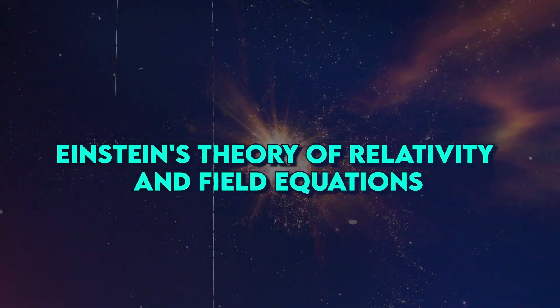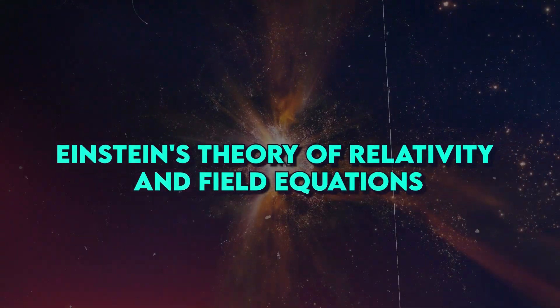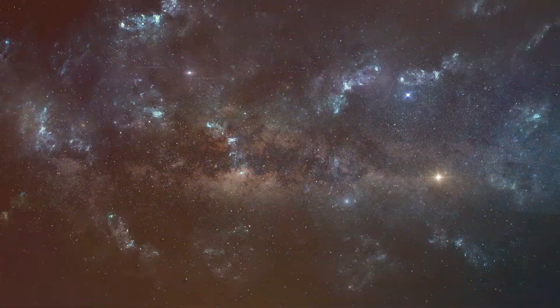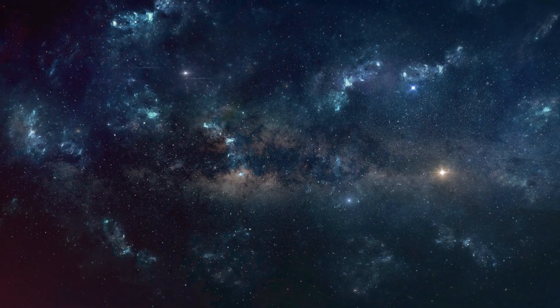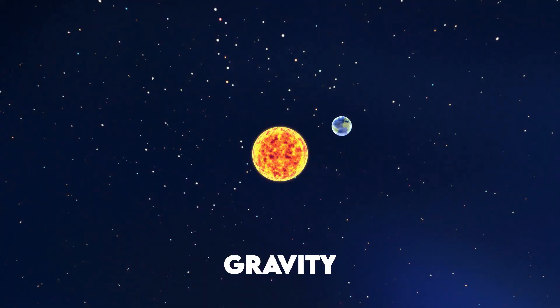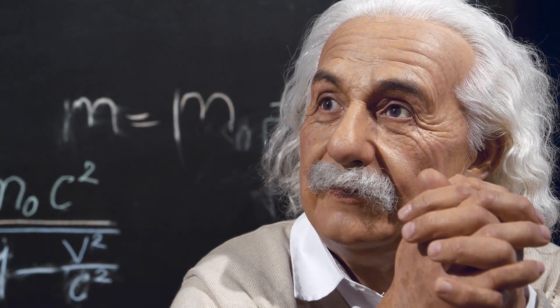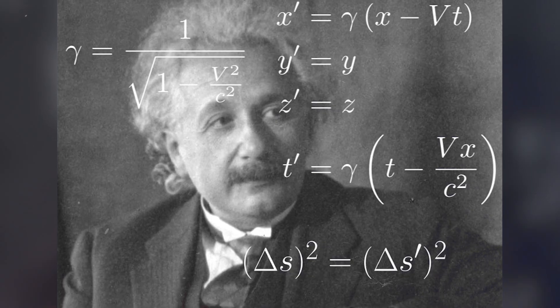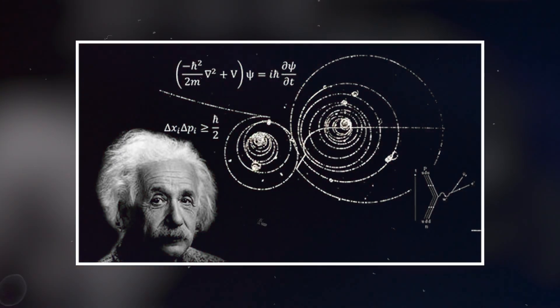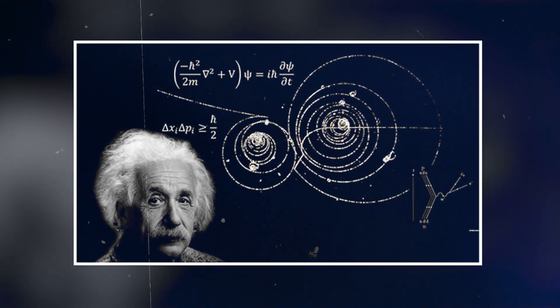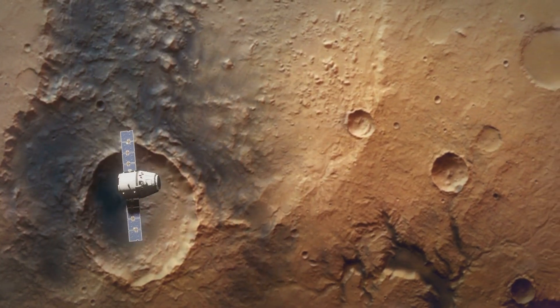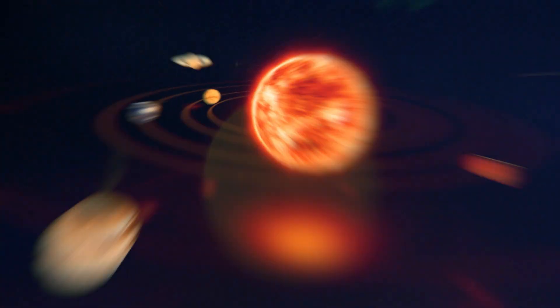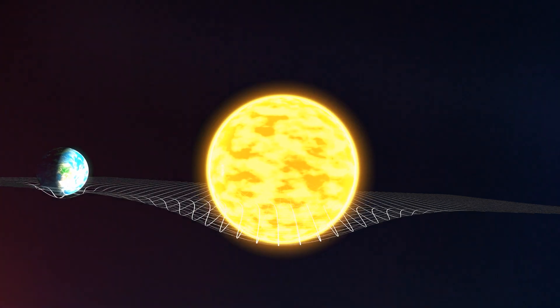Einstein's theory of relativity, introduced in 1915, revolutionized our understanding of space, time and gravity. At its core are Einstein's field equations, a set of complex mathematical relationships that describe how matter and energy interact with the fabric of space-time. These equations reveal that massive objects, like planets and stars, curve the fabric of space-time around them, much like placing a heavy ball on a stretched sheet.